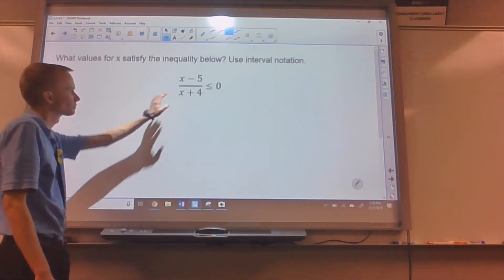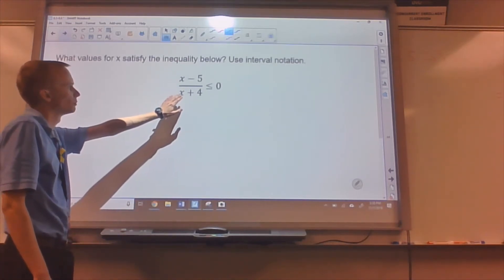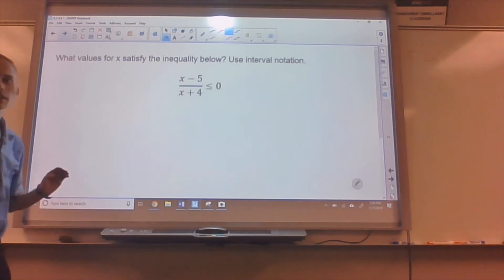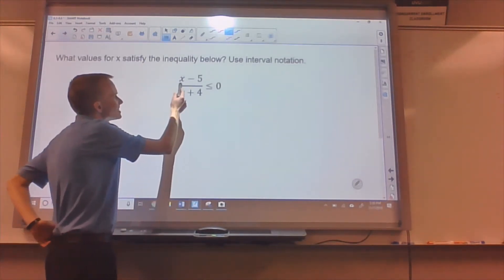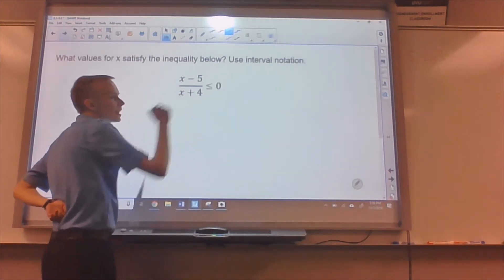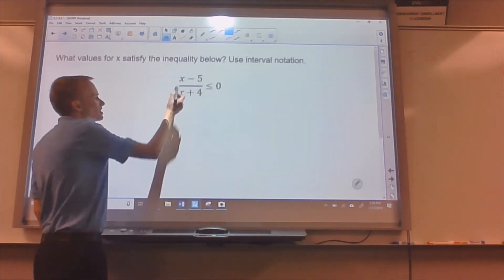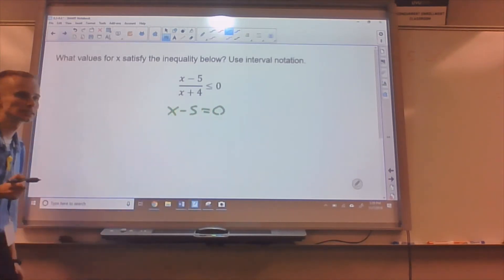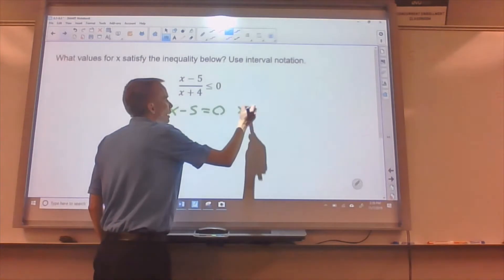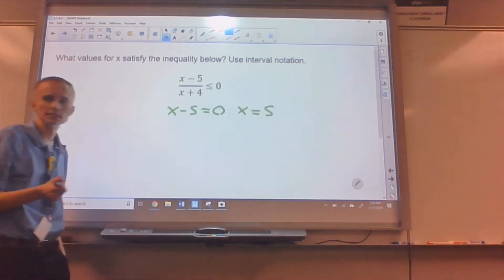So now we're going to do a similar thing with this one. I'll try and go a little faster because we've got a lot to do today. But the big idea, I'm going to say we're trying to make this less than or equal to zero. So I start by setting my top of the fraction equal to zero, which happens at x equals five.